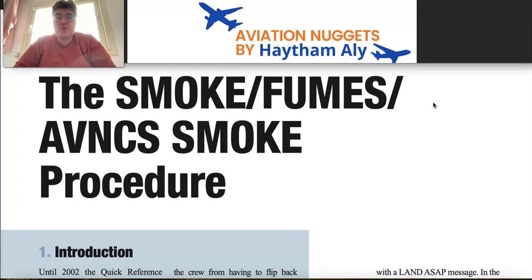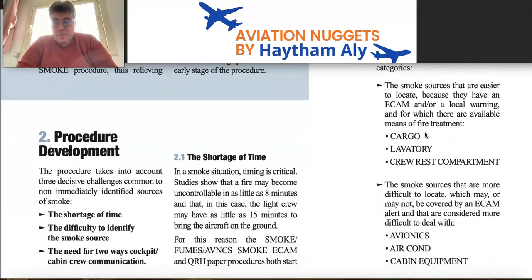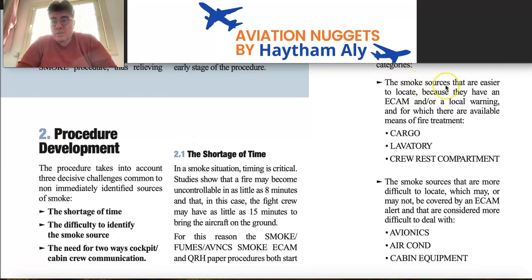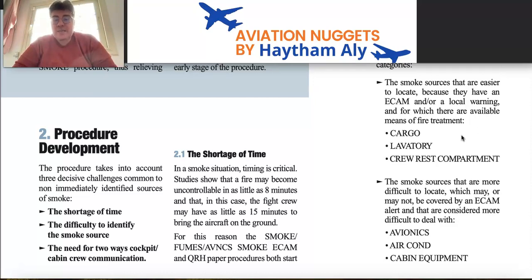Some of these locations you can easily recognize as the source of smoke, while others are difficult to identify. The smoke sources that are easier to locate have an ACAM action and/or local warning: cargo smoke, lavatory smoke, and crew rest compartment smoke. The more difficult sources include avionics, air conditioning bay, and cabin equipment.